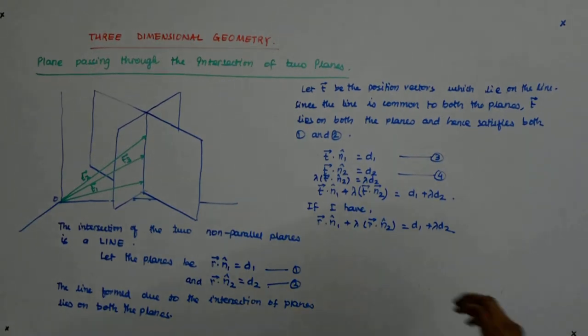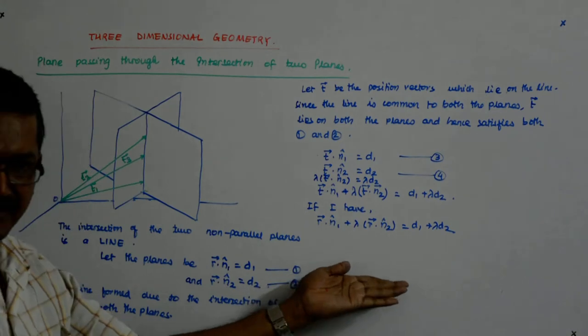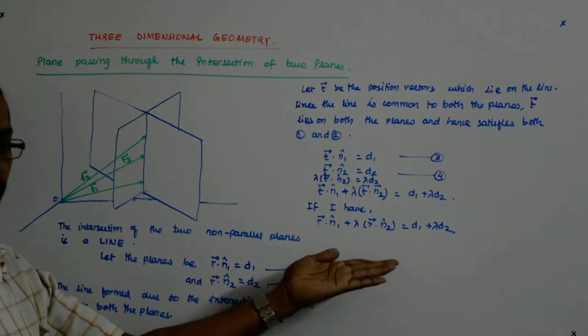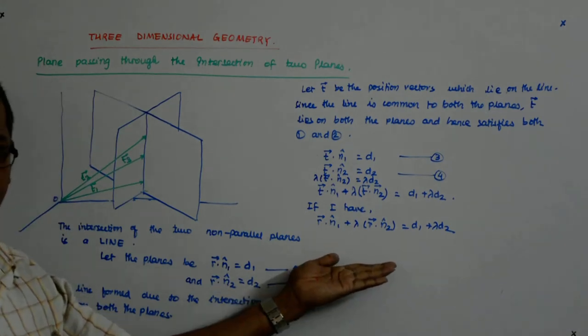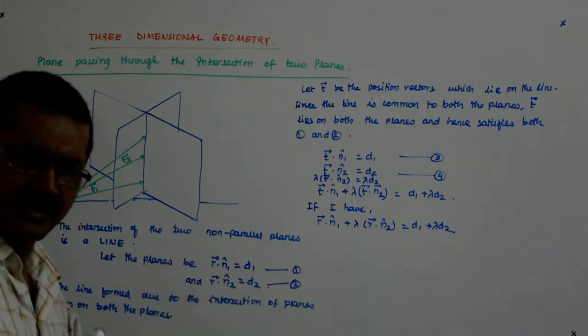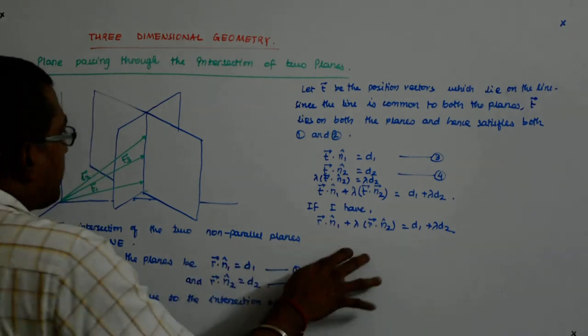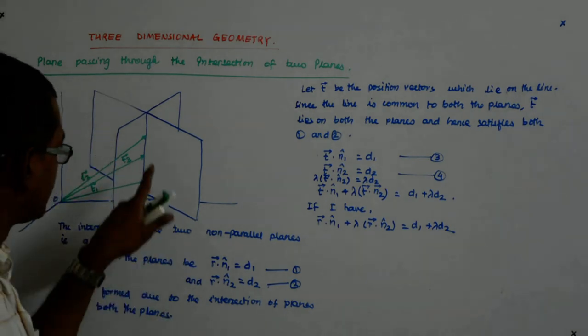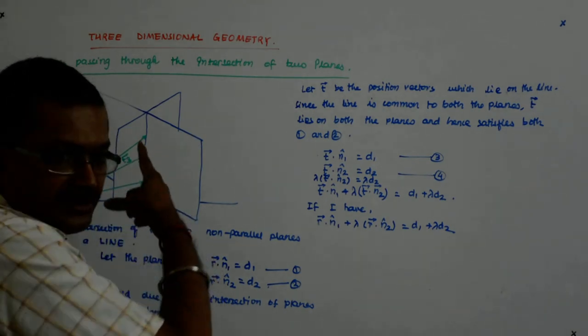I'm saying I do not know what equation this represents, but whatever it represents, it has to pass through the intersection of these two planes. That means it has to pass through this line.